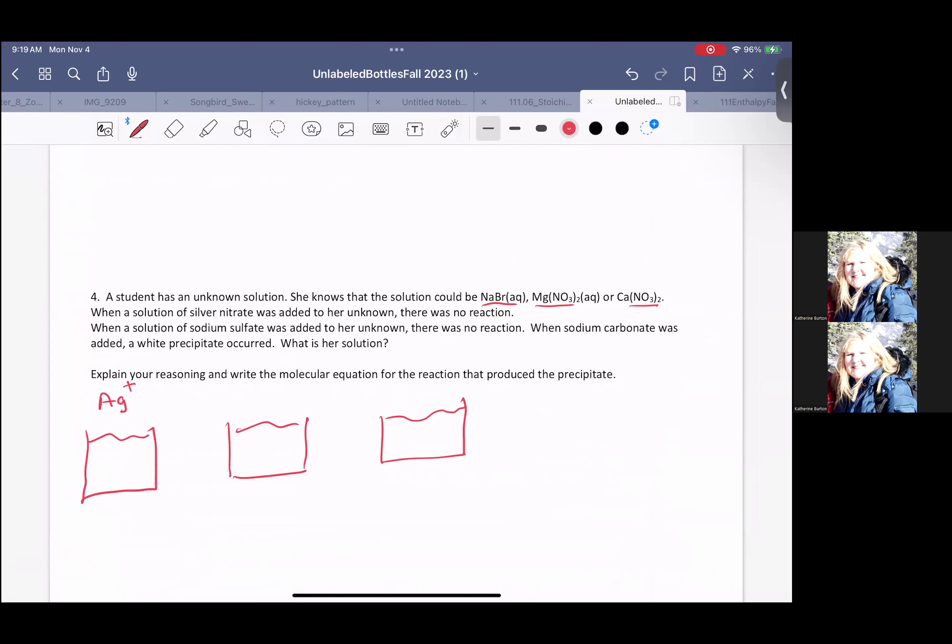So we have, we're going to add silver nitrate. We're going to add it to each of these three possible unknowns. Think about what a reaction is. Apply your solubility rules and make sure you explain your logic as to which your unknown possibly is.